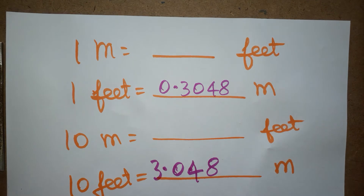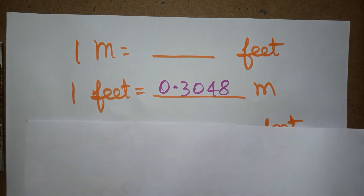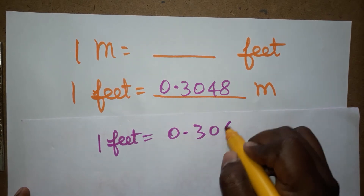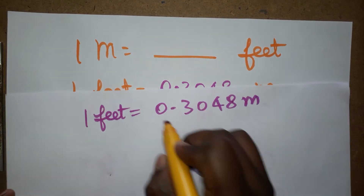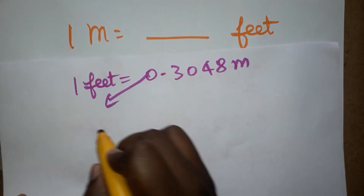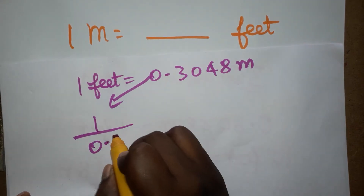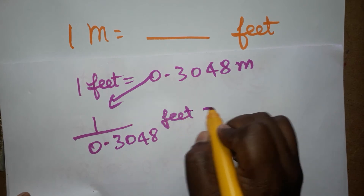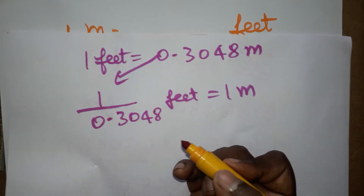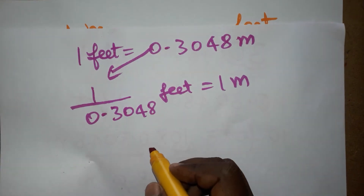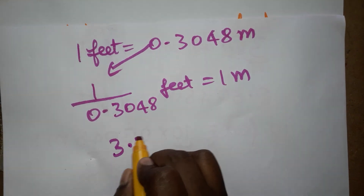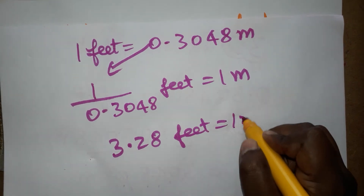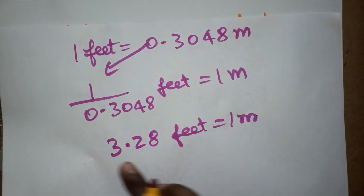Next question: 1 meter is equal to how many feet? Since 1 foot equals 0.3048 meters, we bring this value to the denominator: 1 divided by 0.3048 feet equals 1 meter. You can use a calculator or do it manually — this gives us 3.28 feet equal to 1 meter.